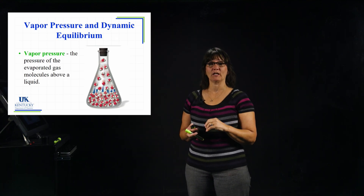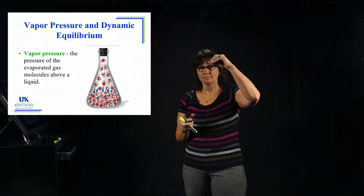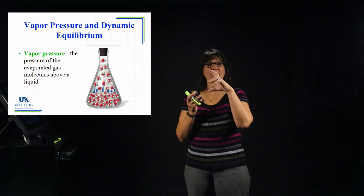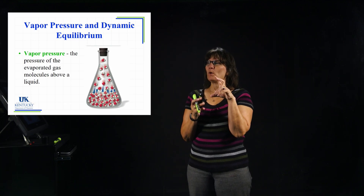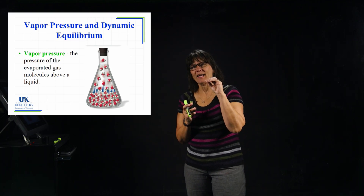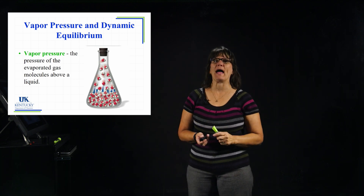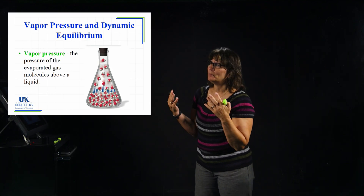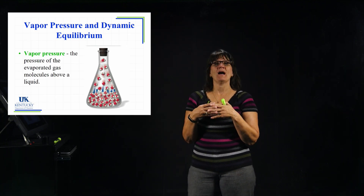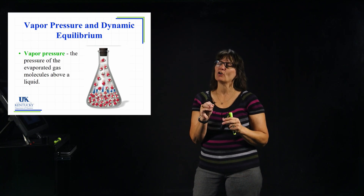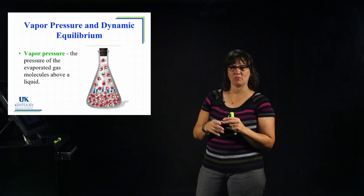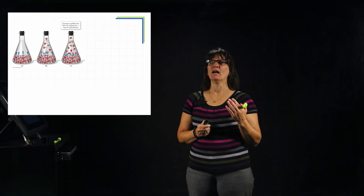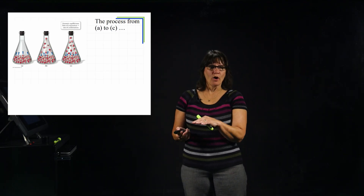Anytime you take a liquid and put a lid on it, some evaporation is going to occur, putting some of that liquid into the gas phase — we call that a vapor. We can actually measure that vapor pressure. There might be air molecules, oxygen, or nitrogen in there, but when we talk about vapor pressure we're talking about the partial pressure only of the liquid that got into the vapor phase.